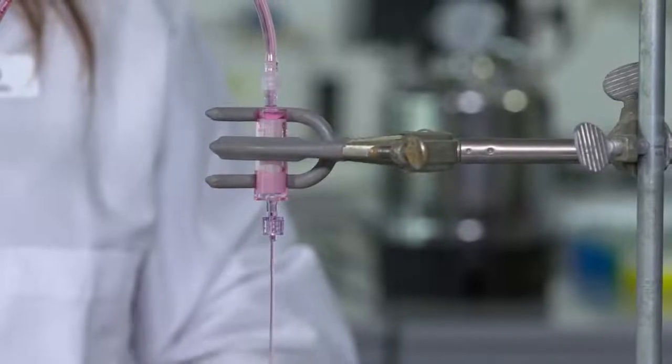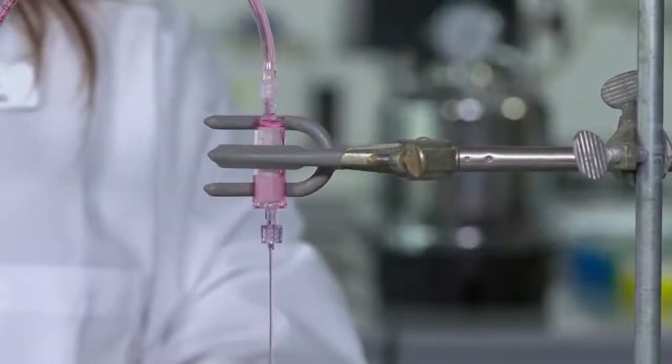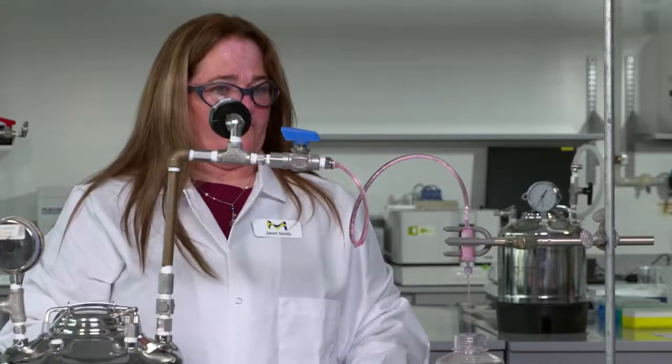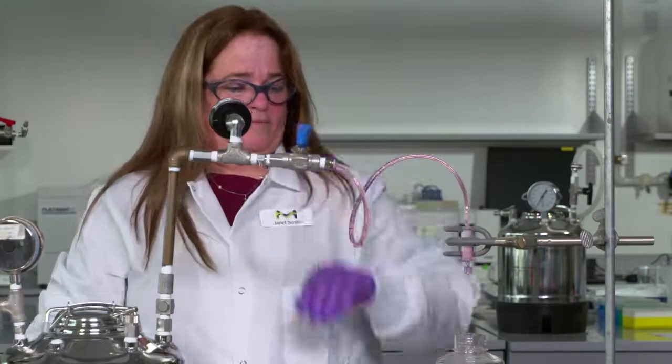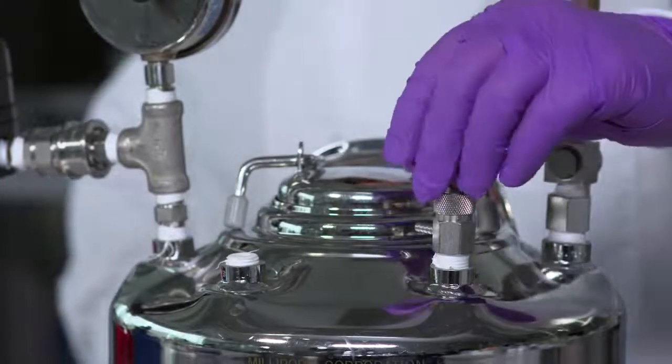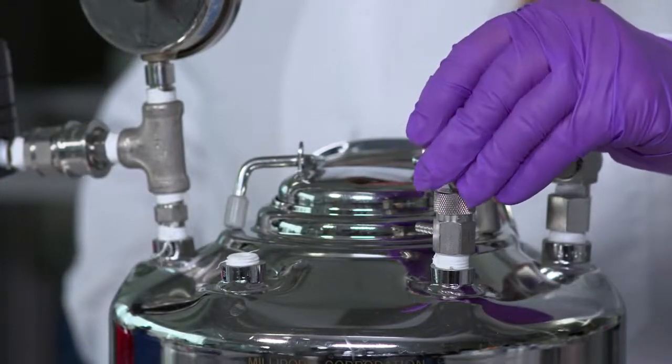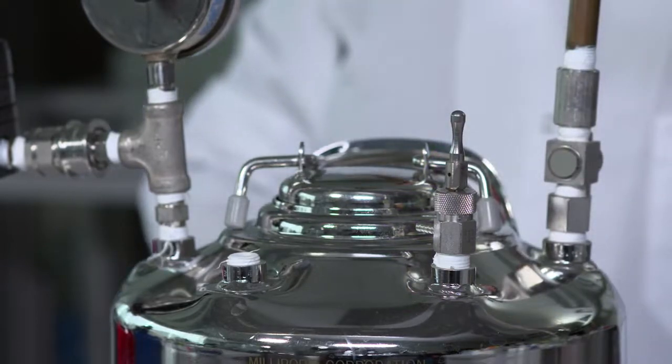If needed, tap device to dislodge any air bubbles within the housing of the device to allow to vent out. Turn outlet valve off when complete or pause flow. Turn off pressure source. Depressurize pressure vessel using the vent relief valve. Once completed, the Sterivex filter can be removed, discarded appropriately, and pressure vessel opened for cleaning.